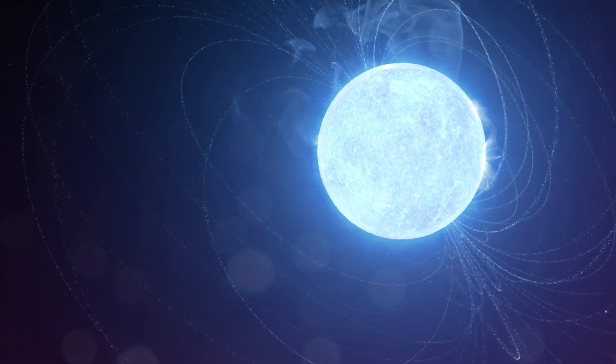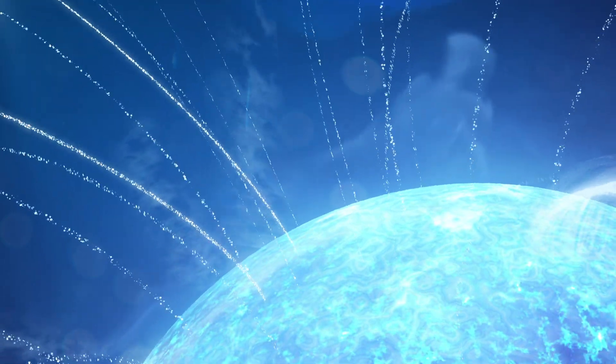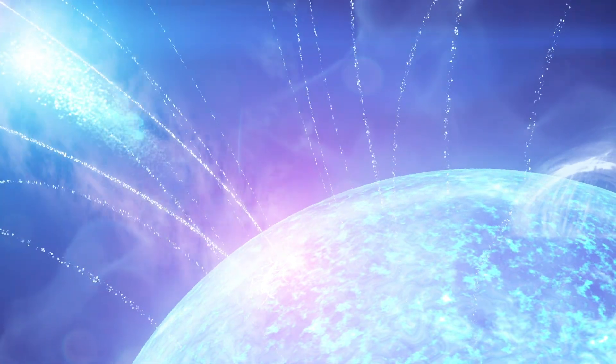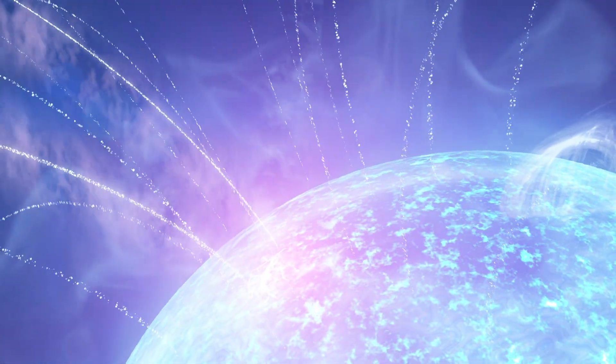Sudden changes to this ultra-strong field are thought to drive brief, enormously powerful outbursts called giant flares. One giant flare in our own galaxy affected Earth's upper atmosphere from 28,000 light-years away.